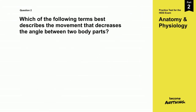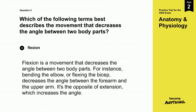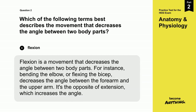The correct answer is C. Flexion. Flexion is a movement that decreases the angle between two body parts. For instance, bending the elbow, or flexing the bicep, decreases the angle between the forearm and the upper arm. It's the opposite of extension, which increases the angle.